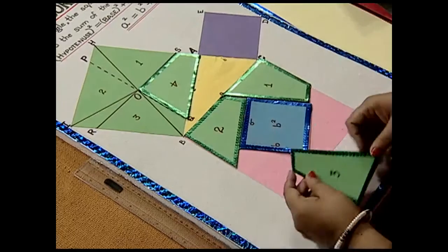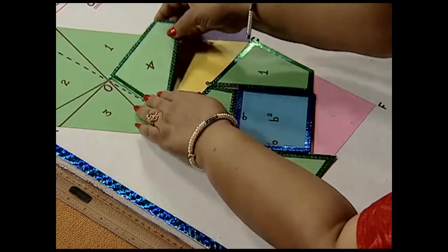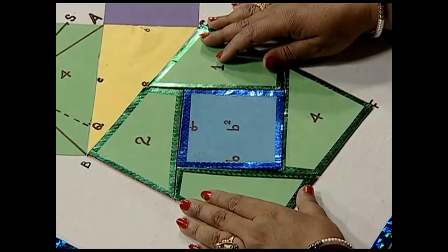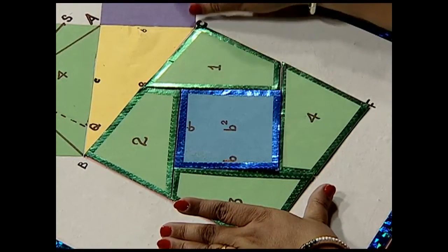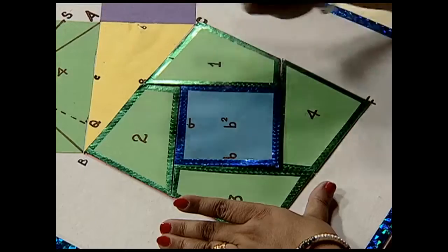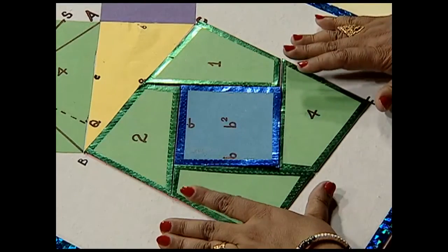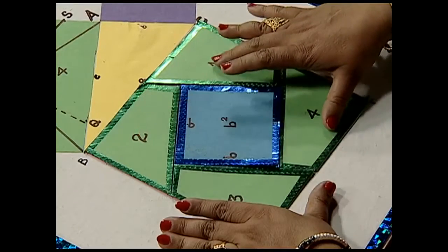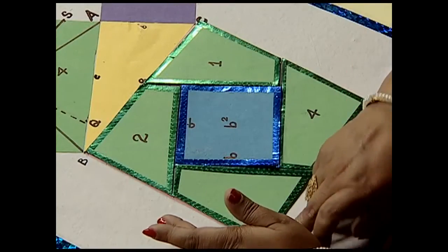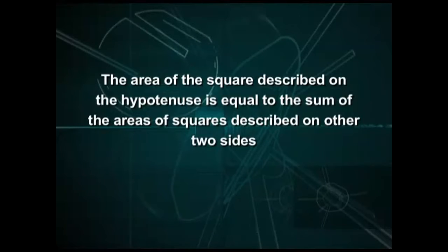Now we arrange the remaining pieces so that they completely overlap the square. Here is the third quadrilateral and the fourth quadrilateral. What do we observe? We observe that the squares on the other two sides of the right triangle are equal in area to the square described on the hypotenuse. These four quadrilaterals and the square completely overlap square BCFG, thus verifying our result: the area of the square on the hypotenuse equals the sum of the areas of the squares on the other two sides. Thank you.